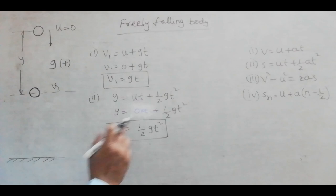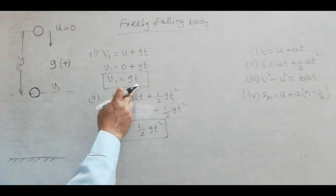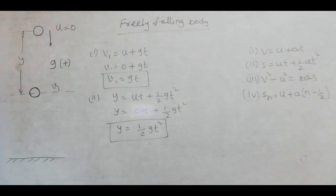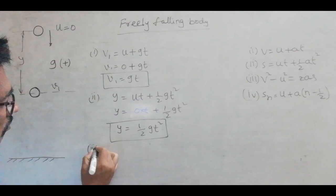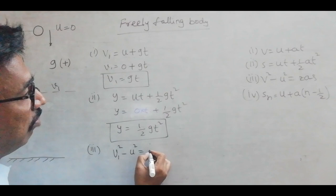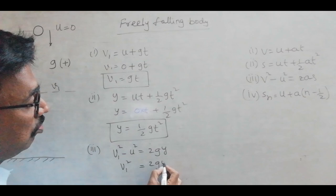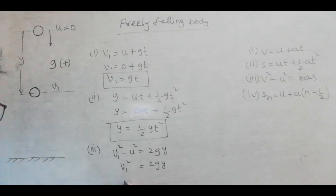We can use the other relation also, provided the time T is not given. Suppose we want to find out the instantaneous velocity V1 when Y, the vertical displacement, is given. In such case, we can use the relation: V1 square minus U square equal to 2GY, and as U equals 0, we get V1 square equal to 2GY, or V1 equal to square root of 2GY.